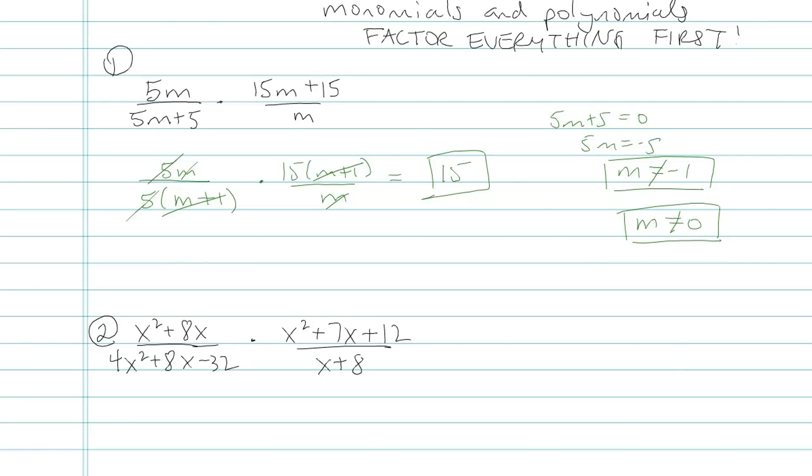So that tells me my other domain restriction. This is important. Notice how my final answer was just plain old 15. 15 is equal to this original product, right? But I can't just leave my answer as 15 and say m could be any value I want. My original problem tells me my domain restrictions, not the final answer. Let's try another one.